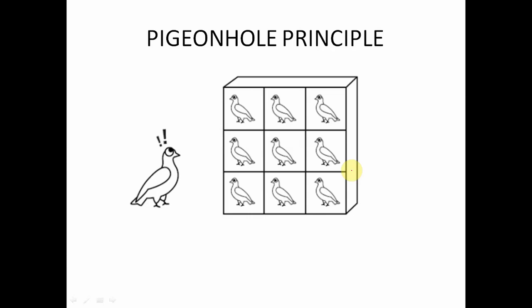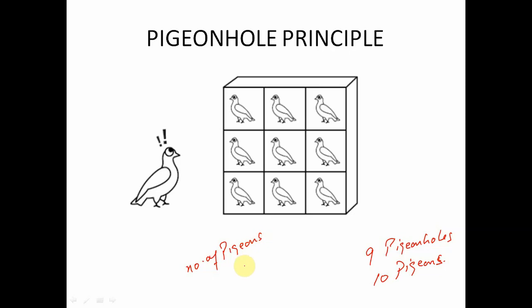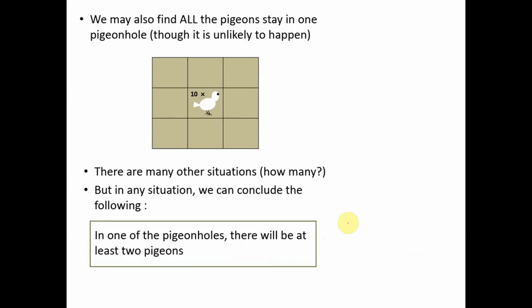The basic idea is that the number of pigeons is more than the number of pigeon holes. There are many possibilities. One of the simplest is that all the pigeons can be placed in a single pigeon hole, leaving the remaining 8 pigeon holes empty.